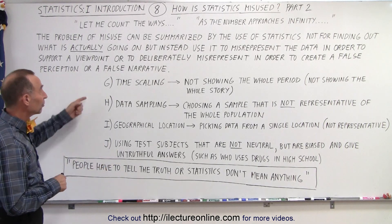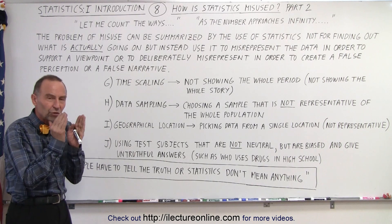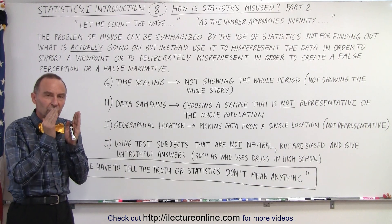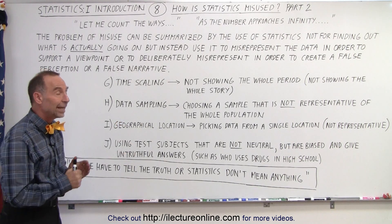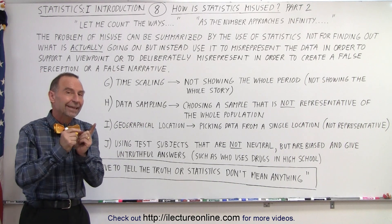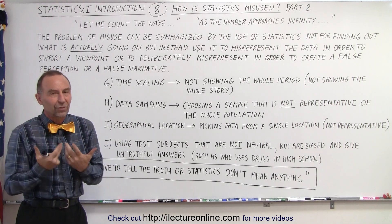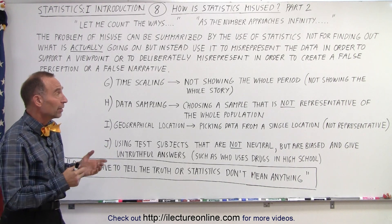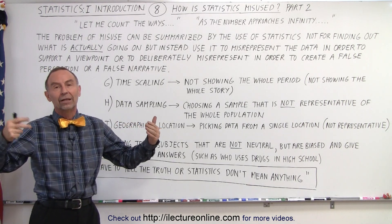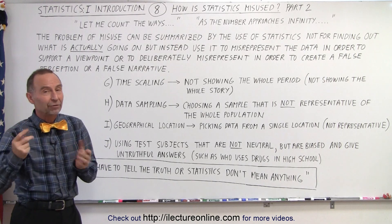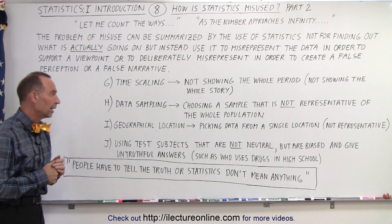The next one is called time scaling. Quite often they only show a very small snippet of the total representation of all the data, because that small snippet is exactly what they're looking for in order to sell a certain narrative. But if you show the whole period, you can see that there may not be as much importance or relevance to that small snippet that they were misrepresenting.